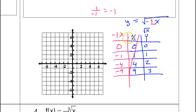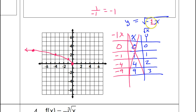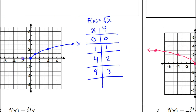Now that we have the new x column, we throw out the old one and graph these points: 0,0; negative 1,1; negative 4,2; and negative 9,3 — estimated about here. This graph starts at the origin and curves to the left. Notice this is a reflection over the y-axis. Having a negative b value gives a reflection over the y-axis, sending the graph to the left instead of the right.